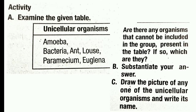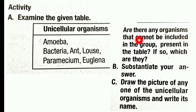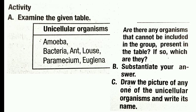This is how we use the first chapter. Now let's examine the given table of unicellular organisms: amoeba, bacteria, paramecium, euglena. The question is: are there any organisms that cannot be included in the group? Draw the picture of any one unicellular organism and write its name.